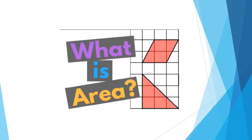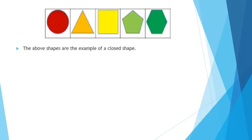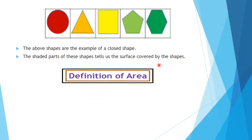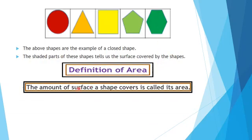Let's start our topic with the concept of area. The above shapes are examples of a closed shape, as their starting and ending points are the same. The shaded parts of these shapes tell us the surface that is covered by the shapes. Therefore, the amount of surface a shape covers is called its area.